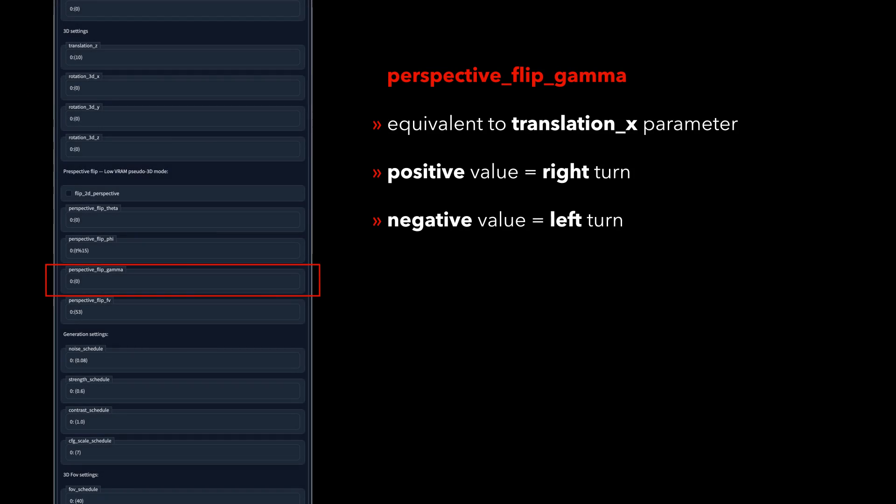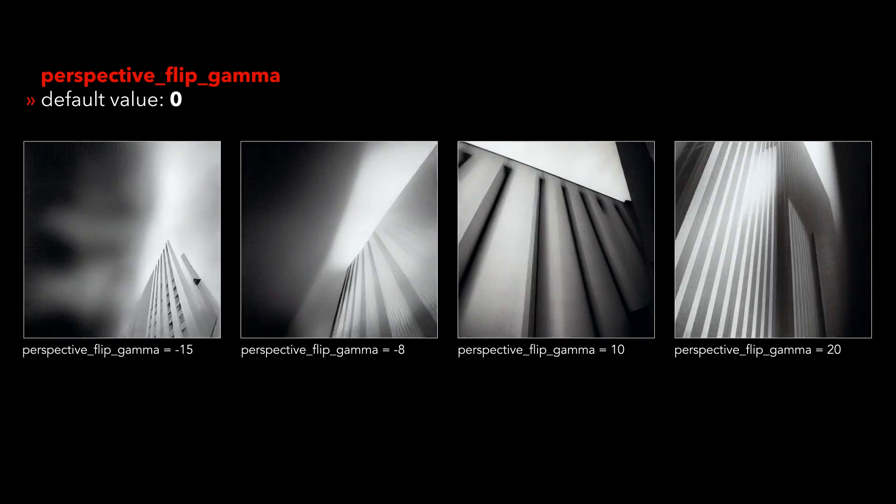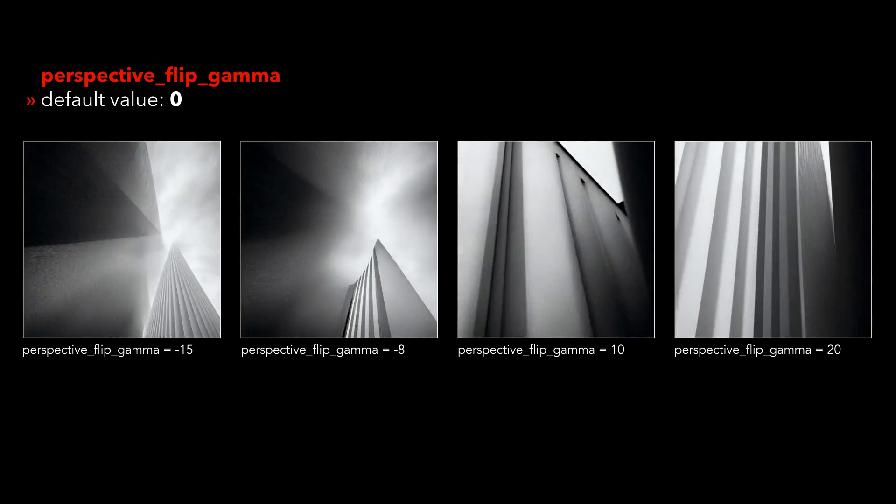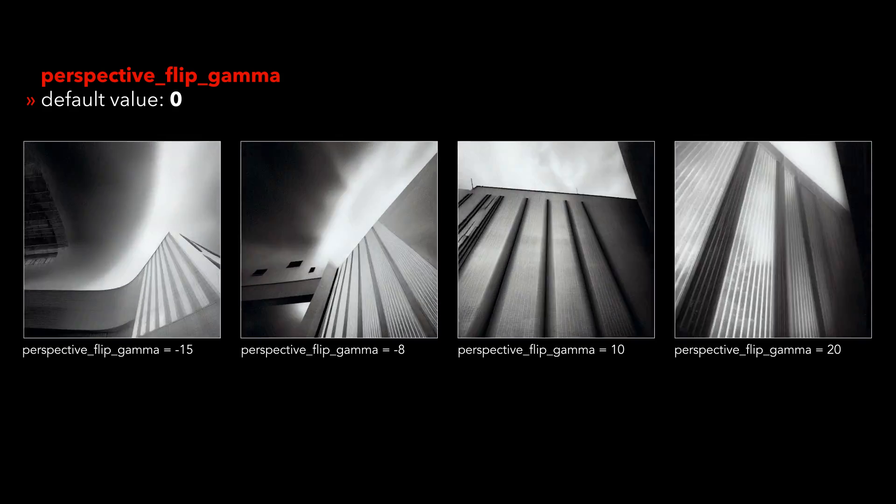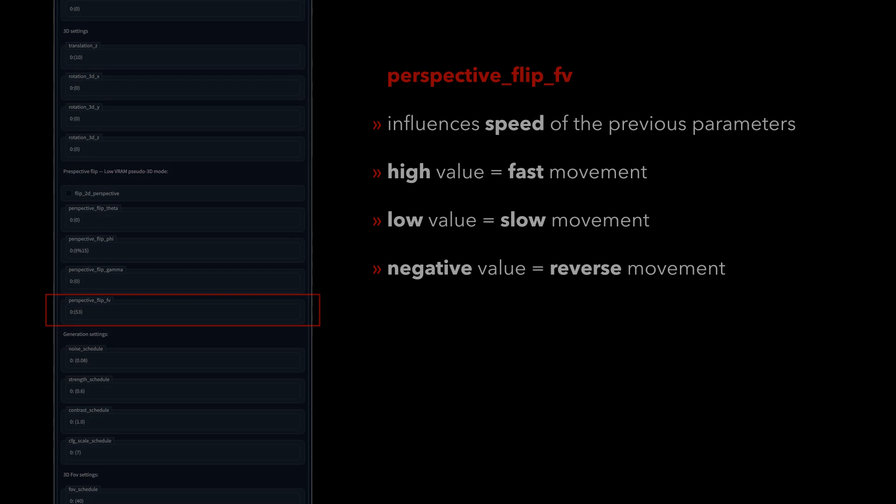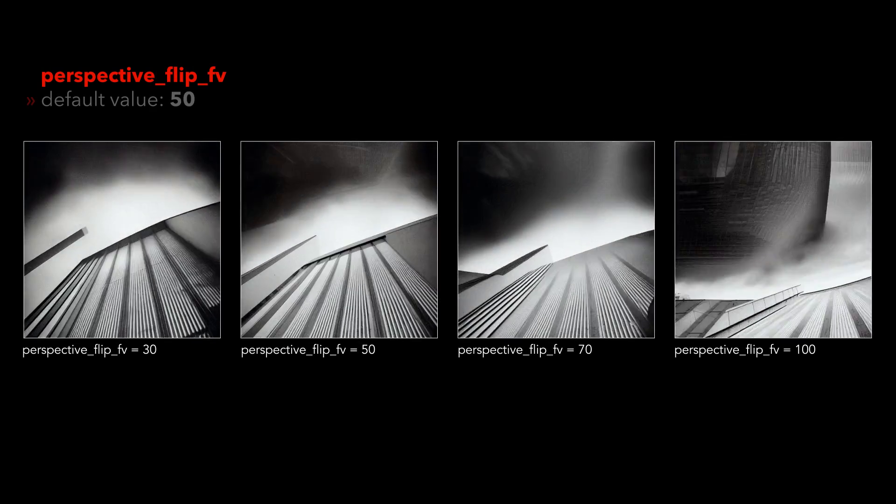Gamma will turn the camera on the x-axis, negative to the left, positive to the right. And finally FV, this setting will influence the focal view and the speed of the previous parameters. We will take a deeper look into the definition of the focal view in a minute.